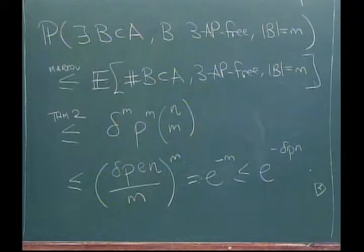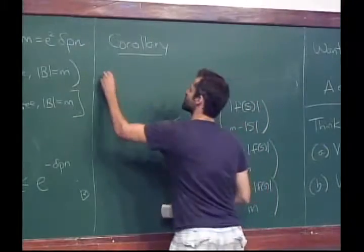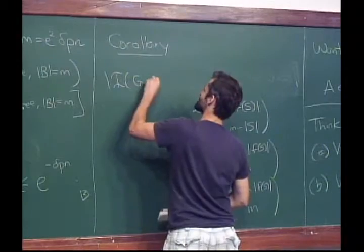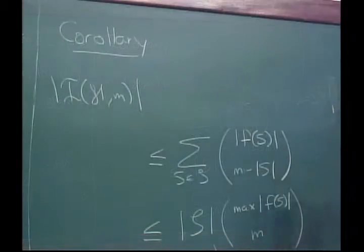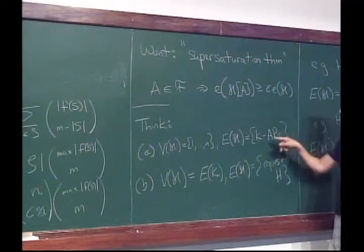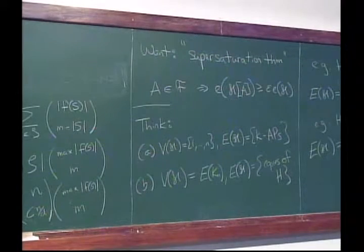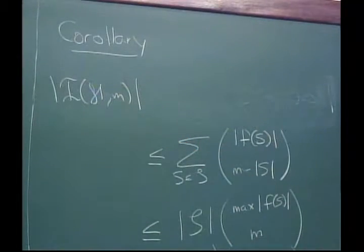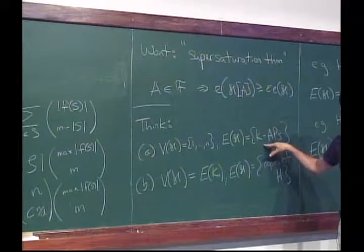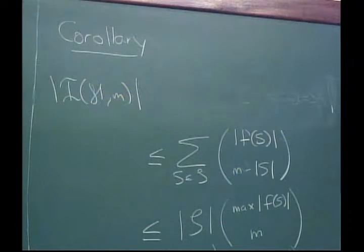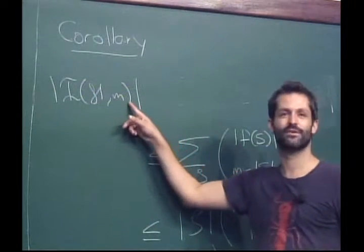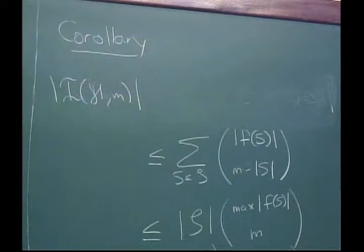So if we can get a bound on the number of independent sets in this hypergraph — with K equal to 3 an independent set is exactly a 3-AP-free subset of size M — then we are just trying to count this set in order to prove Theorem 2. So it's exactly the thing we're trying to count.